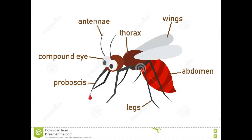Let's take a look at the main parts of the mosquito. Mosquitoes have six legs, one head, and one thorax to which the pair of wings is connected. In the part of the head, there are eyes, two antennas, and one proboscis. The last main important part is the abdomen, which is a storage system like a stomach.